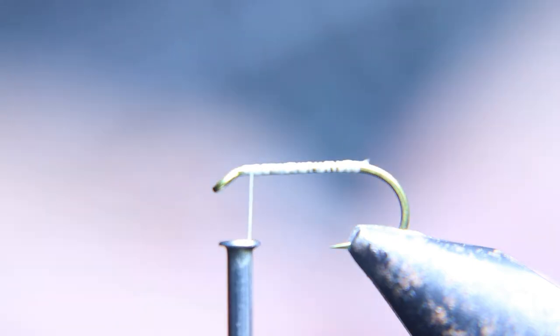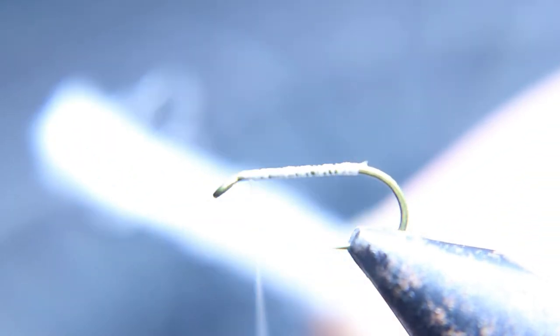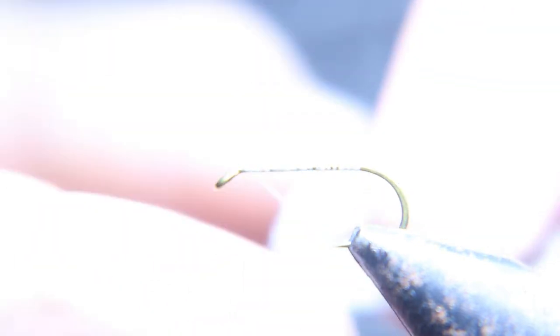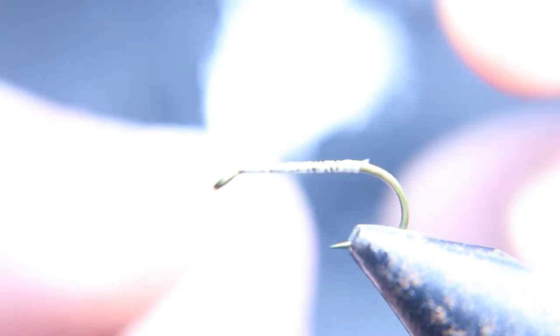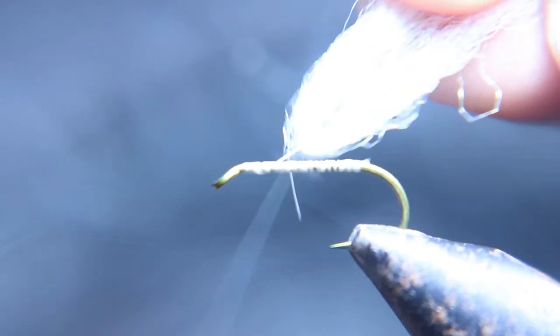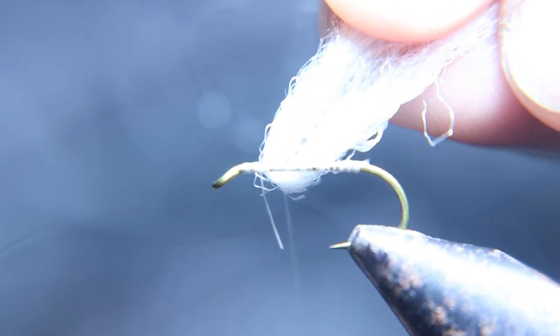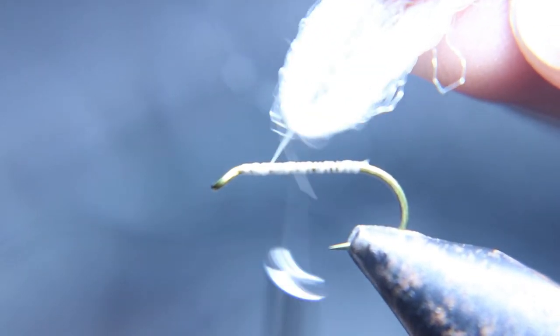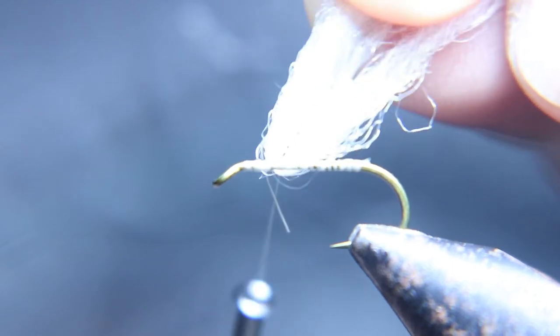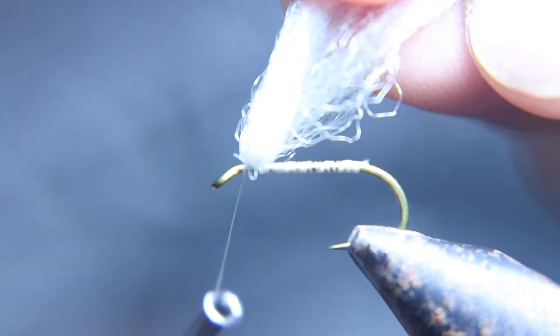Now we're going to use some of that floaty funky synthetic yarn, whatever name you want to call it. And I double that up. It usually comes off a roll at a certain thickness. I double that up. Then I bend it over the thread and pull that right down on top of the hook.